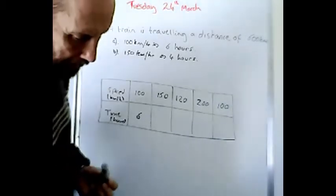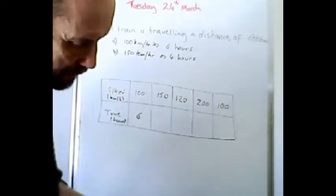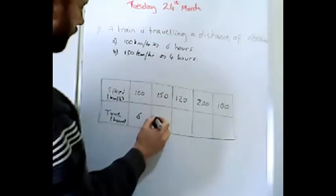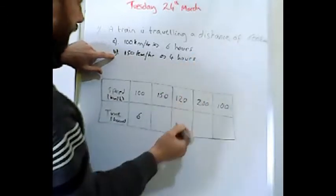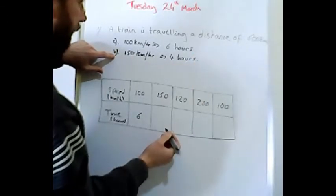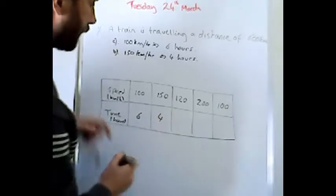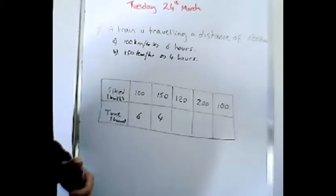It then says to us, the next question is to copy and complete the table. So we've got 150 here, 600 divided by 150, it will do it in four hours. Yeah, so then the next one.